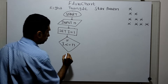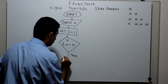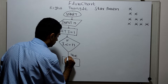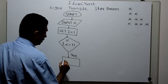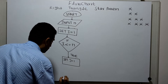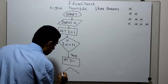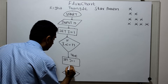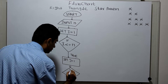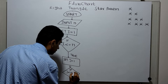If the condition is true, I am using an inner loop variable set to j equal to 1, and I am checking the inner condition: if j is less than or equal to i.